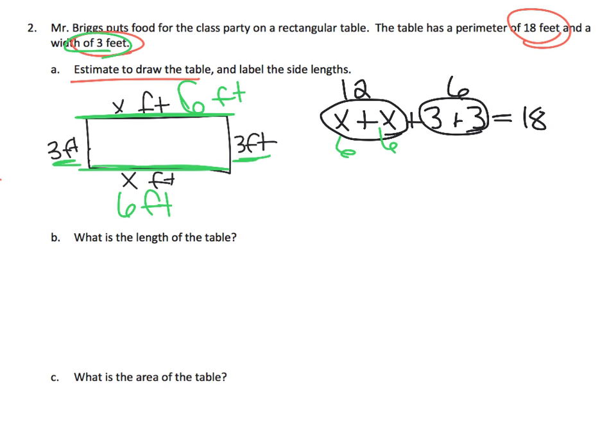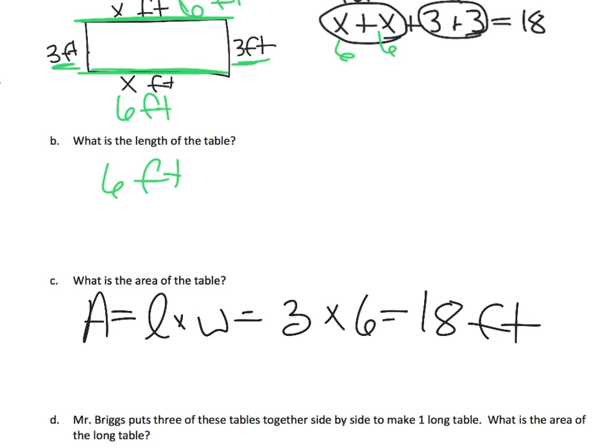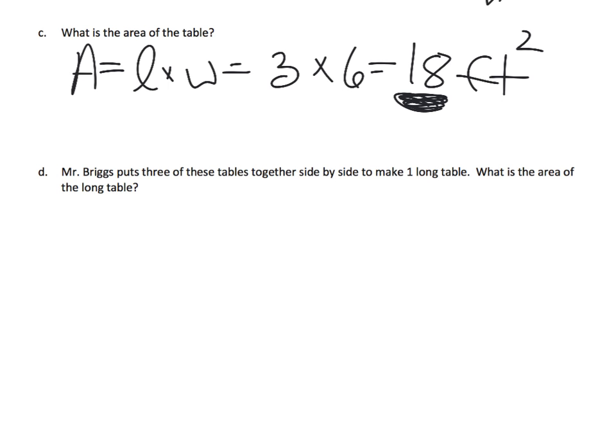What is the length? Length is six feet. And what is the area of this table? Well, area is length times width. In this case, it's going to be three times six, which is 18 square feet. Which is actually kind of cool because coincidentally, the area and the perimeter have the same number. They both are 18, but one is 18 feet while the other is 18 square feet, and that's because we're counting tiles for the area.